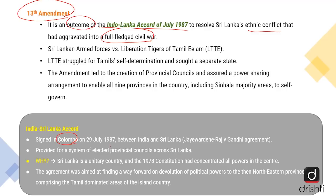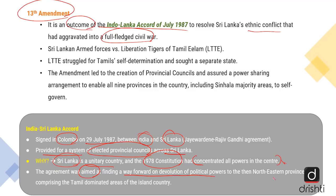This accord provided for a system of elected provincial councils across Sri Lanka. Sri Lanka is a unitary country, and the 1978 constitution had concentrated most of the powers in the center, leaving little power within the smaller provinces. The accord was aimed at finding a way forward on devolution of political powers to the then northeastern province, comprising the Tamil-dominated areas of the island country.